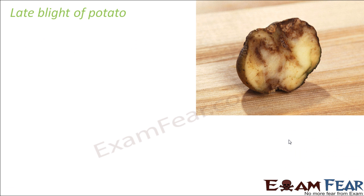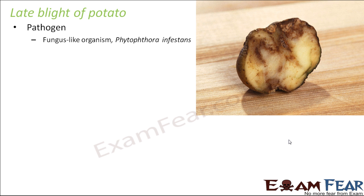The next disease is late blight of potato. A sliced diseased potato has boundaries that are rotten and blackish structures inside. This is caused by a pathogen called Phytophthora infestans, which is not exactly a fungus but a fungus-like organism.